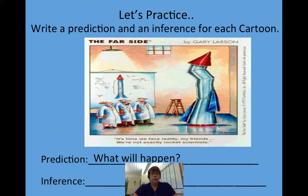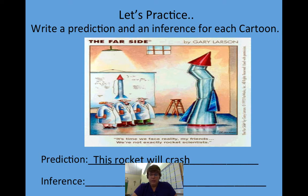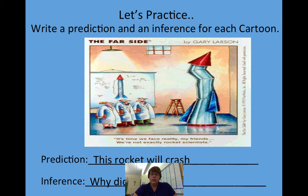Looking at the rocket cartoon, you could have all kinds of different answers — maybe the rocket's going to crash because it's a funny shape, or maybe the scientists are trying to decide what they're going to do with it. For example: this rocket will crash because it's not straight, so it's probably not going to go where they want it to. Then the inference: ask why did that happen — why do you think the rocket's going to crash or why does it look the way it did?